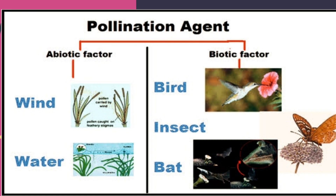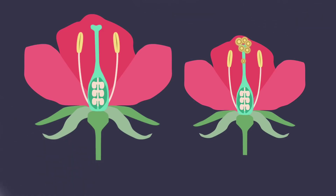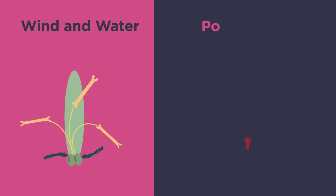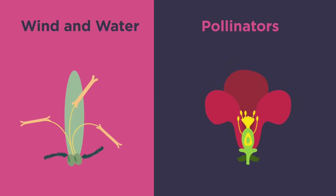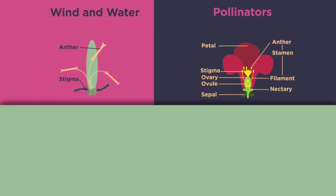Flowers can be pollinated in different ways — by wind, water, or by pollinators. Pollinators may be insects, birds, or other animals that help transfer pollen grains from the anther to the stigma. Flowers pollinated by wind or water are quite different from those pollinated by pollinators.